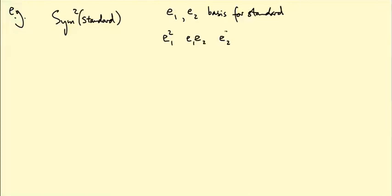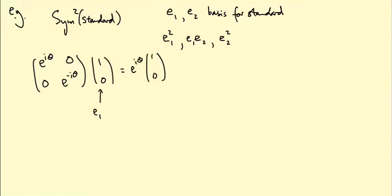Let's just do one more. Let's take sym^2 of the standard representation. So if e1 and e2 are a basis for the standard representation, then sym^2 has a basis basically by polynomials e1 squared, e1 e2, and e2 squared.